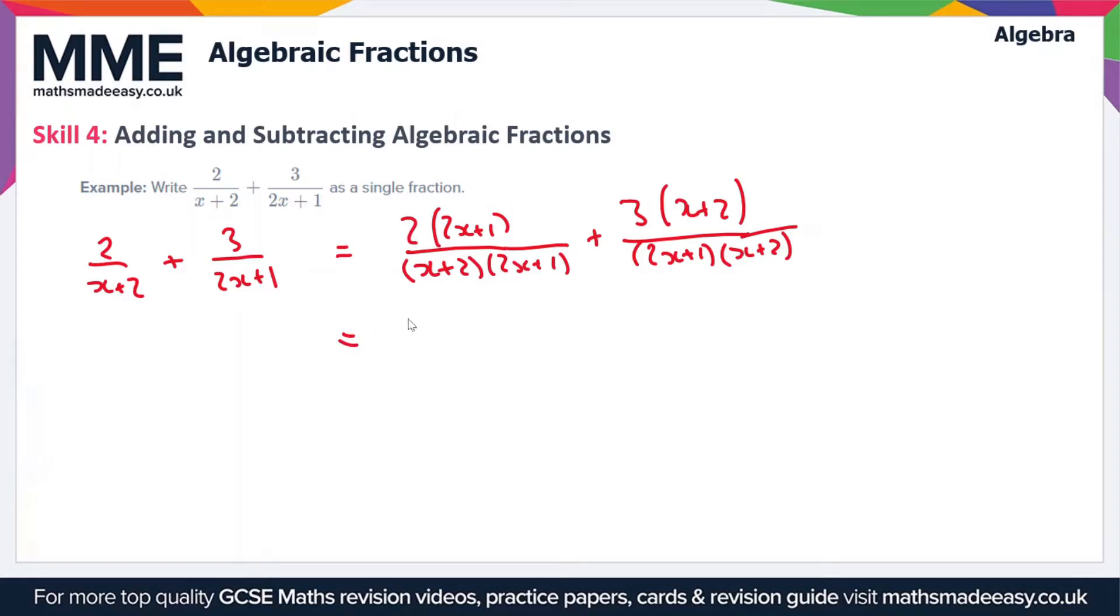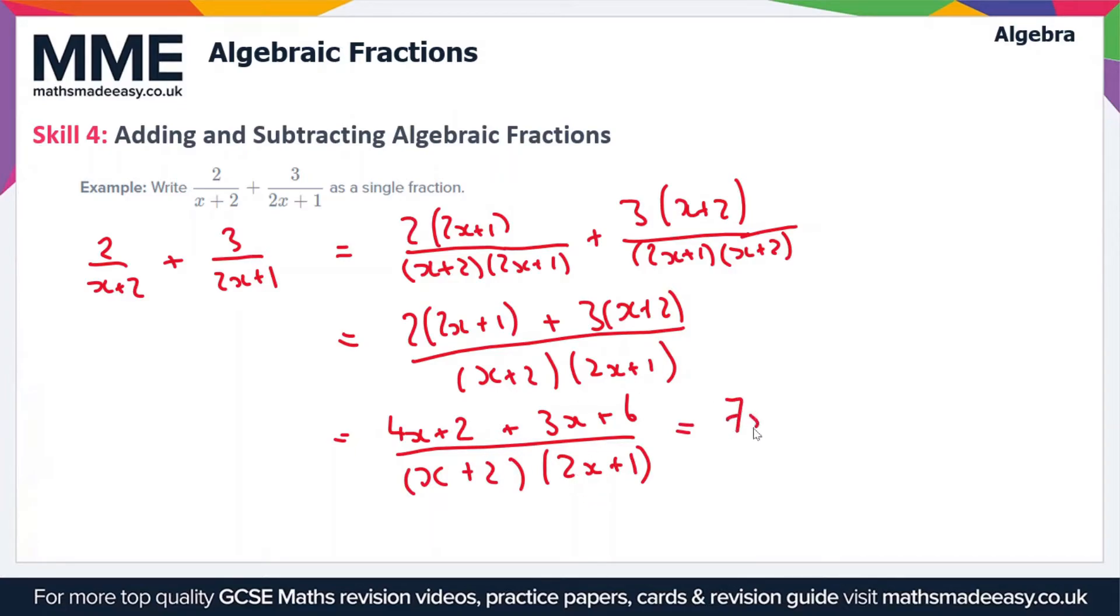So we can just add the numerators together. So we've got 2 times 2x plus 1 plus 3 times x plus 2, and we're dividing that by x plus 2 times 2x plus 1. So this first line will simplify to 4x plus 2 plus 3x plus 6. I've just expanded the single brackets there and we're dividing that by x plus 2 times 2x plus 1.